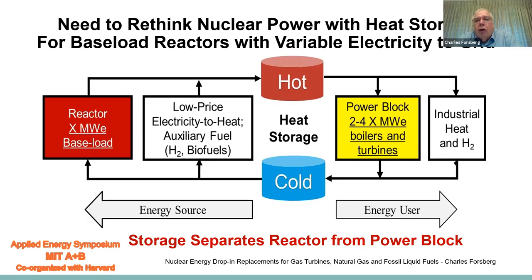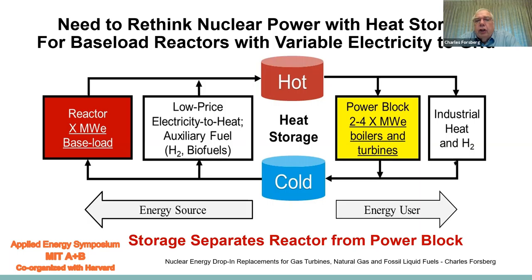In the middle of this picture, we show heat storage — a hot storage tank and a cold storage tank filled with either oil or nitrate salts. To the left, we have the reactor, which operates at baseload. It takes the cold fluid, heats it, and puts it into the hot storage tank. To the right, in yellow, we have the power block. It takes hot fluid and produces variable electricity, returning cold fluid to the cold storage tank. The power block peak output is two to four times the average power output of the reactor and is designed for variable electricity output.